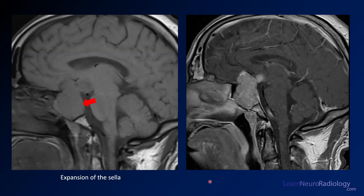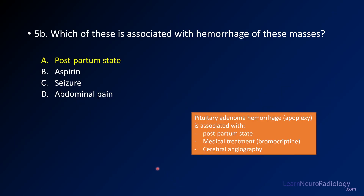On your sagittal images you see the same thing — expansion of the sella far larger than it should be. What you'll note is that there's still some normal cortex at the bottom, so this is expansion over a long period of time; you're probably not looking at a super aggressive mass. On your post-contrast sagittal you see suprasellar extension and a little nodule extending back. The optic chiasm runs right in between, which explains why this patient is having optic symptoms.